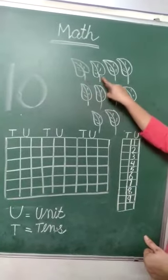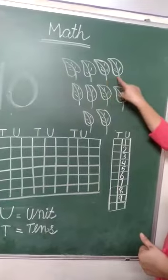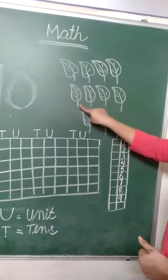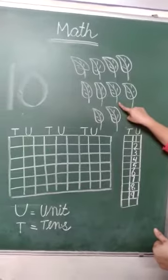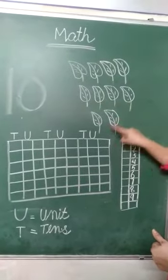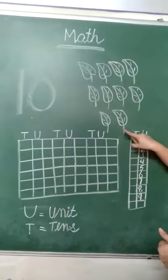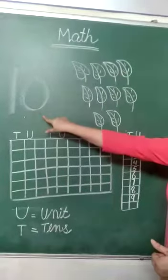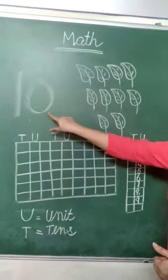1, 2, 3, 4, 5, 6, 7, 8, 9, 10. हमने यहाँ पर कितने पत्ते बनाए हैं? 10. यह कौनसा नम्बर है? 10.